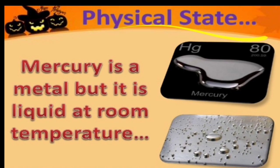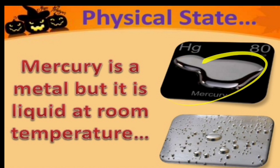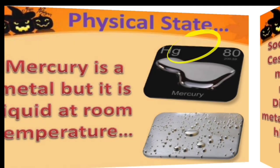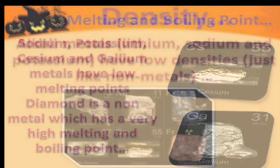Physical state: metals exist as solids, liquids, and gases. Mercury is a metal, but it is in the form of liquid at room temperature. So mercury is the liquid metal. The symbol of mercury is Hg and its atomic number is 80.